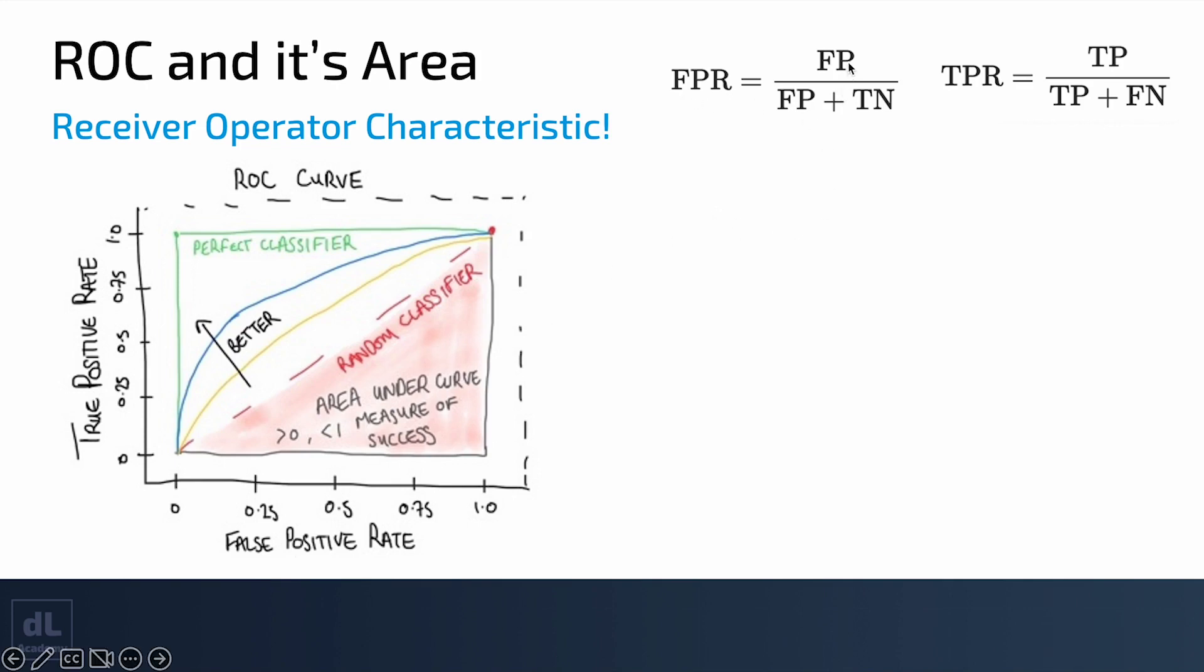False positive rate is the number of false positives, when we incorrectly classify something as positive, divided by the number of false positives plus the number of true negatives. Equally, the true positive rate is the number of true positive samples, when we classify it right, divided by the number of true positives plus the number of false negatives. We're going to plot out for a given classifier a curve. This is a curve for different thresholds, classification thresholds of a binary classifier.